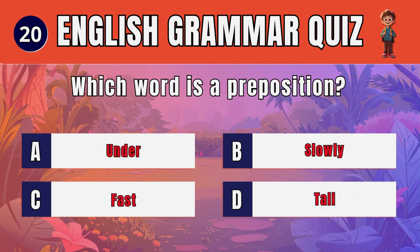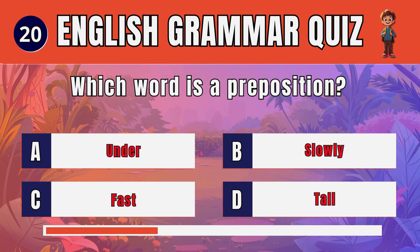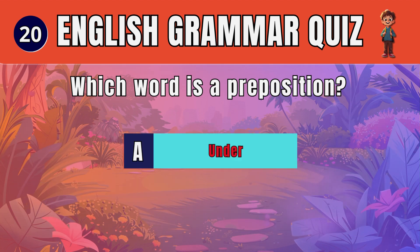Question 20. Which word is a preposition? The answer is: A. Under.